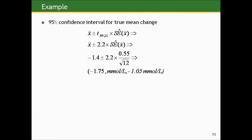Let's use this information to get a 95% confidence interval for the true mean change. The basic recipe is still the same: start with our best guess, the sample mean, then add and subtract a fixed number of standard errors. Since we only have 12 pieces of information, we need to go to a T distribution with 12 minus 1, or 11 degrees of freedom. The value that cuts off 95% under such a distribution is not 2 but 2.2. So we add and subtract 2.2 standard errors to get 95% coverage. Doing this gives a 95% confidence interval for the mean change in cholesterol level from pre- to post-treatment of negative 1.75 to negative 1.05 millimoles per liter.